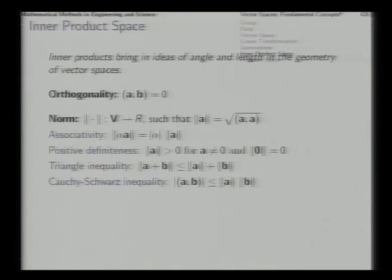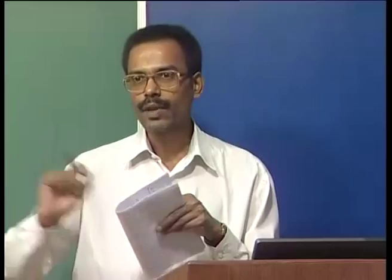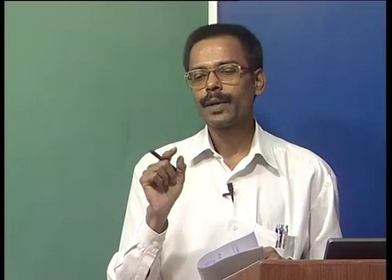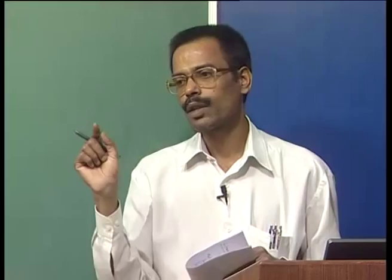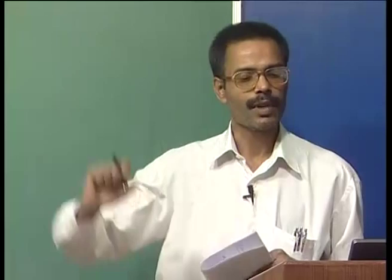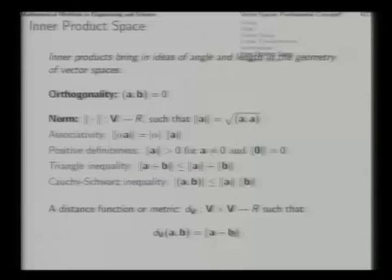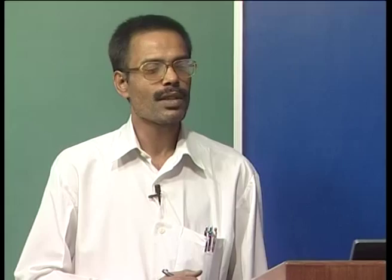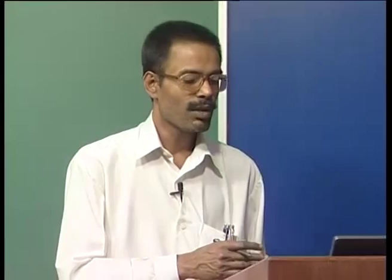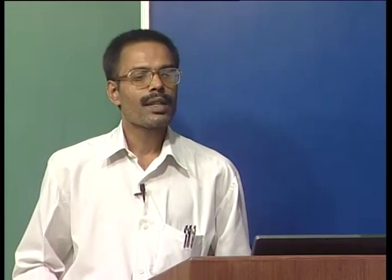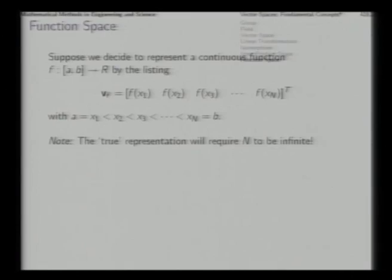Based on inner product and norm you can also work out a distance function or a metric. If you have two vectors, you can work out a distance between them in the sense of joining the arrowheads and working out the size of that resulting vector. With this much discussion on finite-dimensional vector spaces, let us go a little into the discussion of infinite-dimensional vector spaces. The set of continuous functions over an interval provides such a vector space of infinite dimensions, known as the function space.